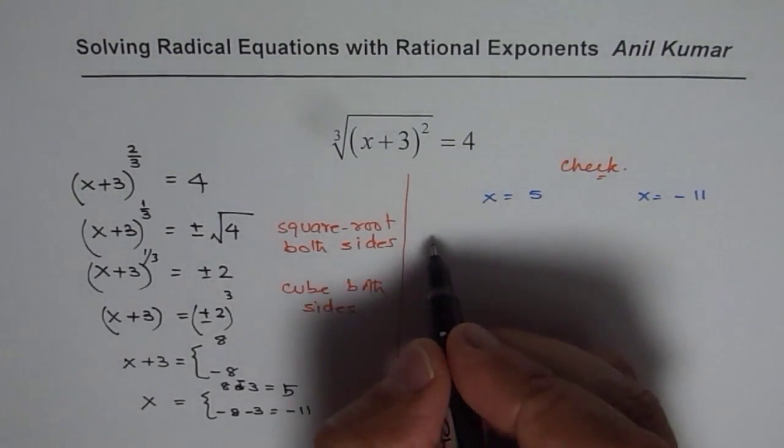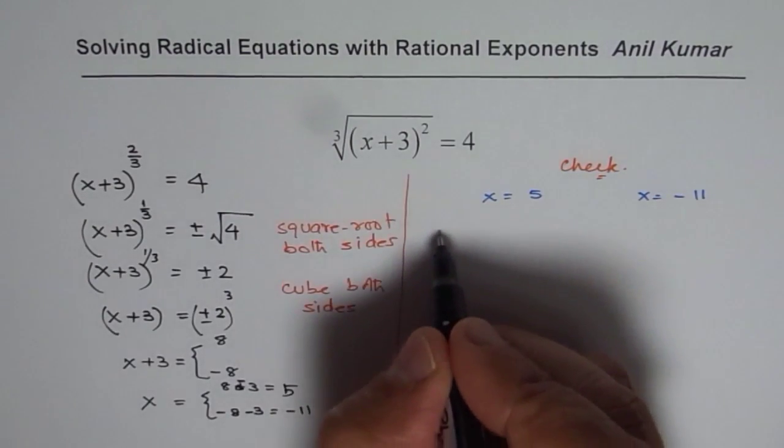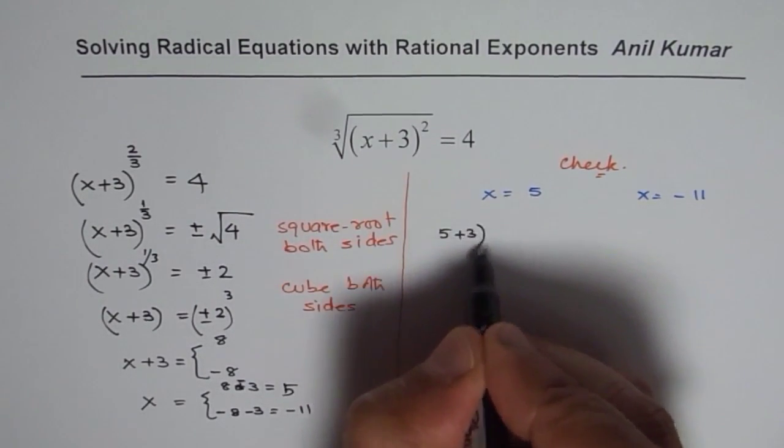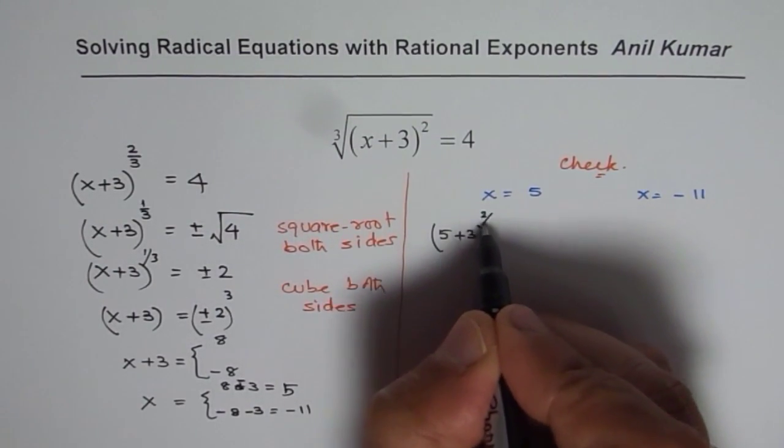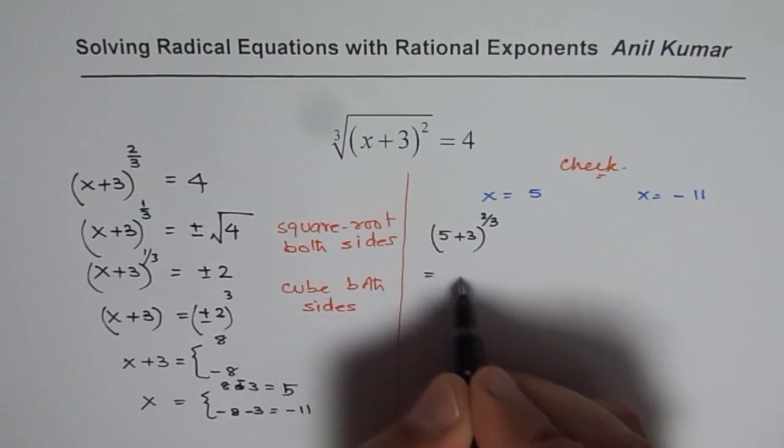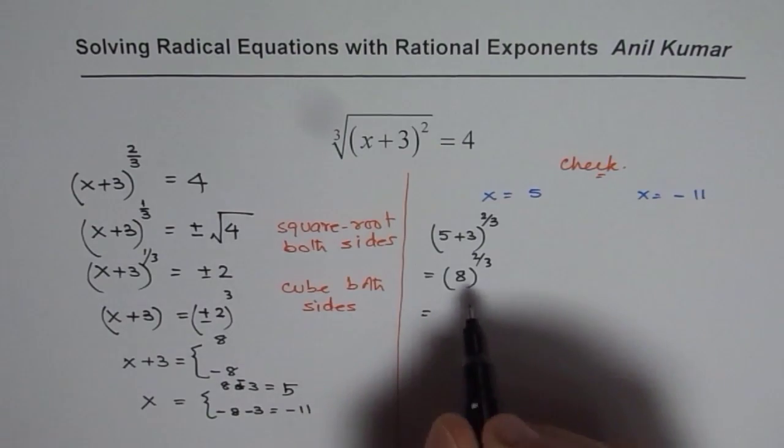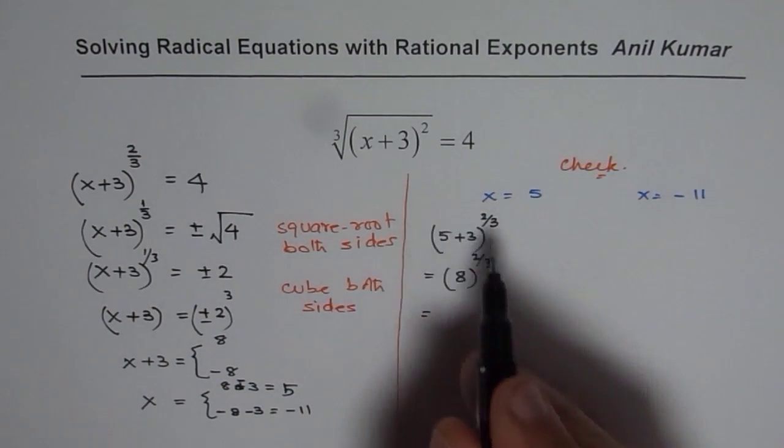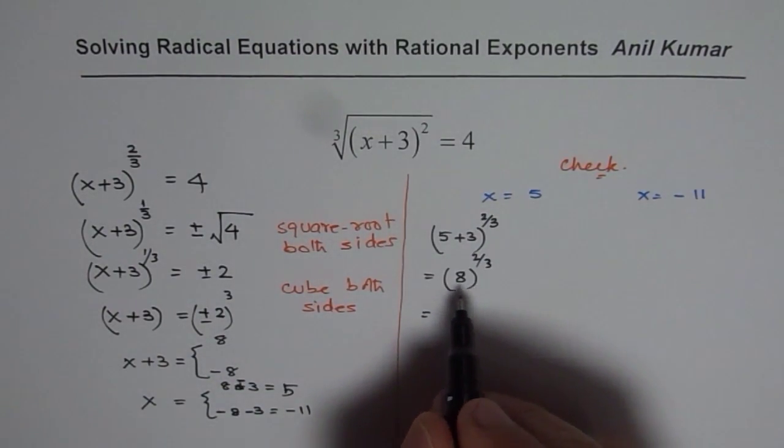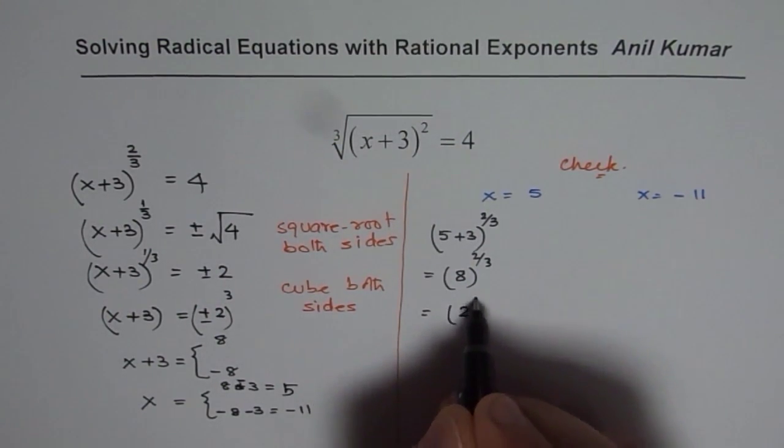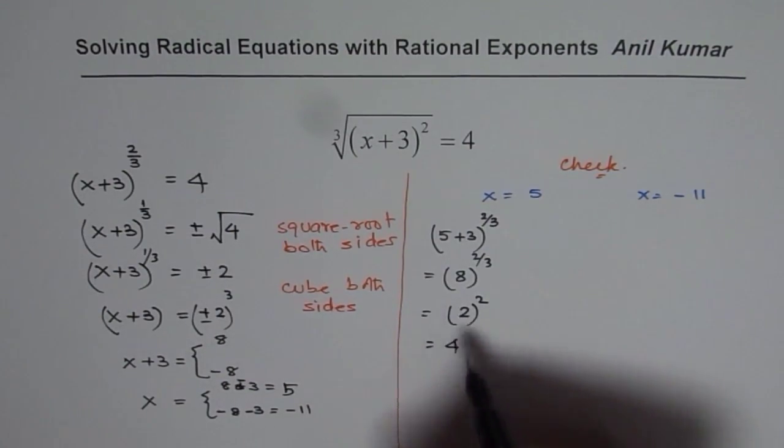The first one is x equals 5. So we will write 5 plus 3 to the power of 2 over 3, and that equals 8 to the power of 2 over 3. Now 8 to the power of 2 over 3 is 4. What you do is first you do cube root. If you do cube root of 8, you get 2. So 2 square, which is 4.